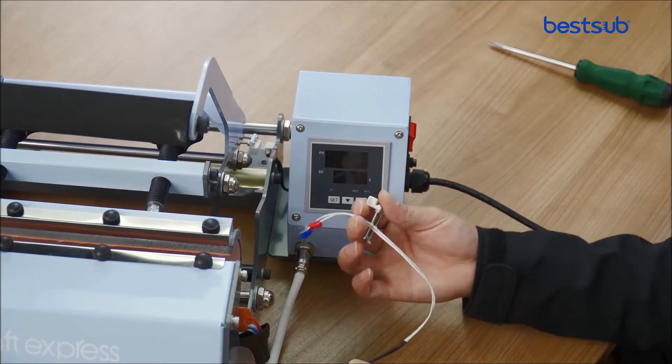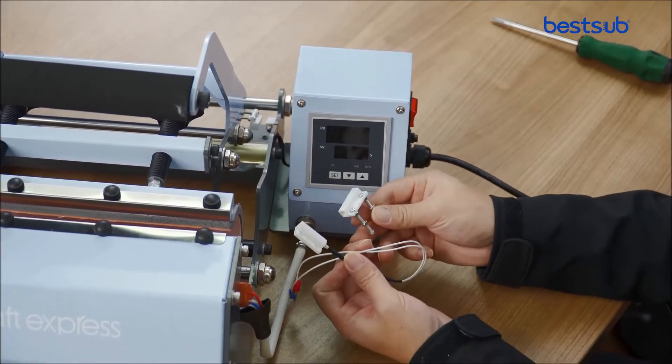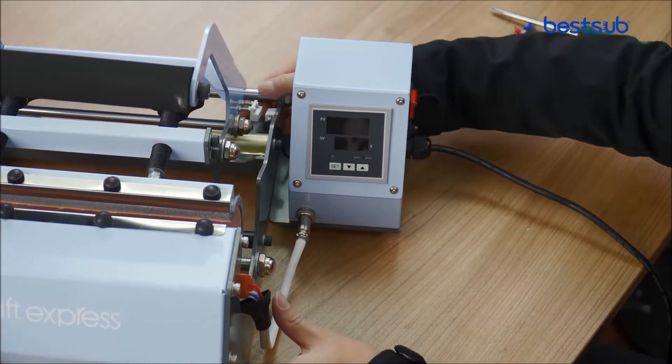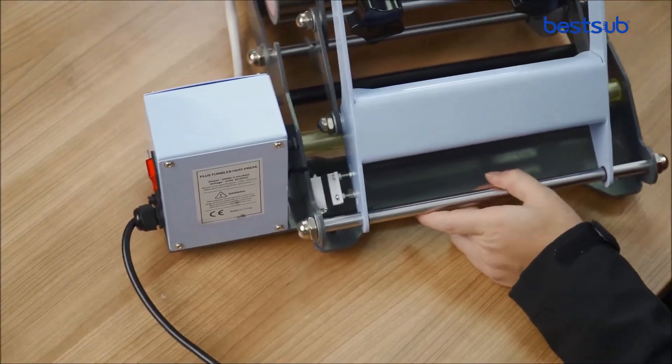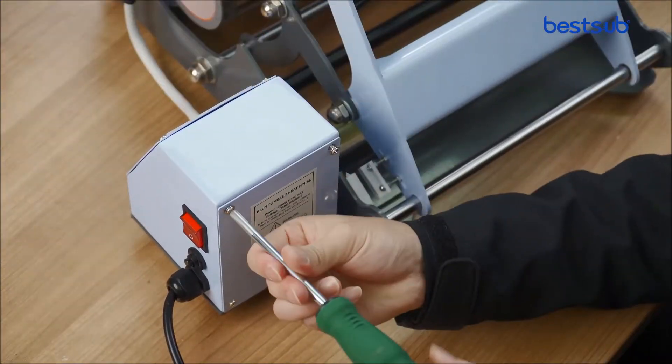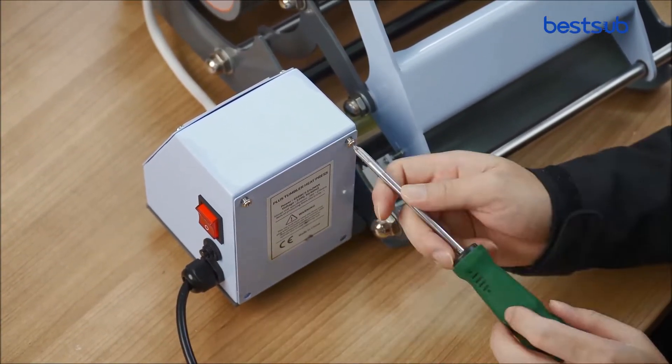Now let's see how to replace the magnetic reed switch. Reed part and magnetic part. First, unscrew both sides of the panel screws.